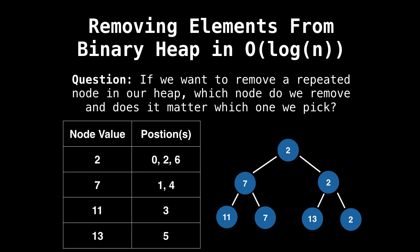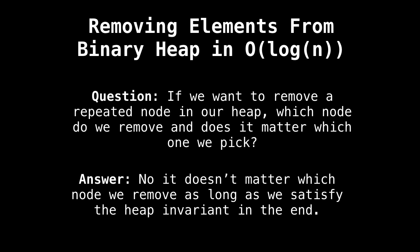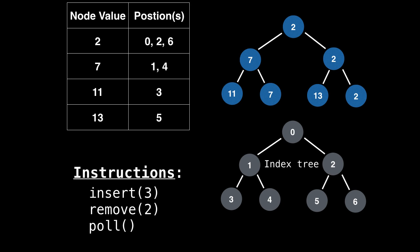Okay, so this all sounds great. We keep track of repeated values by maintaining a set of indices a particular node, the particular value was found at. But now let's ask a further question. If we want to remove a repeated node in our heap, which node do we remove? And does it matter? Because if we look in our heap right here, there's three possible two values we can remove. Does it matter which one we remove? The answer is no, it does not matter. As long as in the end, we satisfy the heap invariant. That's the most important thing. So let's look at an example, not just of removing, but also of adding and pulling elements with this new scheme I just proposed. It's not that hard, trust me.